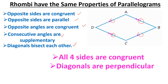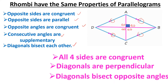The diagonals are also perpendicular — not only do they bisect each other, they are also perpendicular. Diagonal AC and diagonal DB are perpendicular, so they intersect at a right angle. This angle is 90 degrees, so all four angles in the center are 90 degrees.